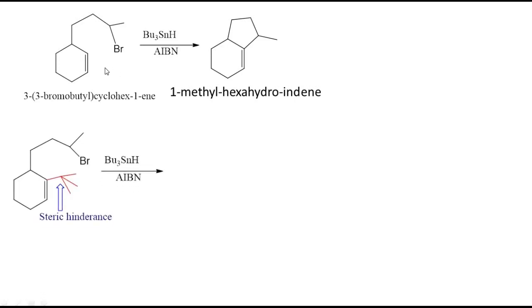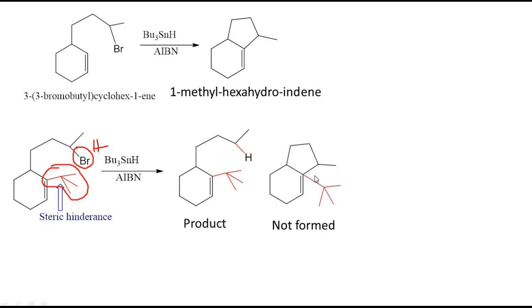Let us take the same reactant here due to steric hindrance. The same reactant we have taken and due to steric hindrance, the product formed, the cyclization will not occur here. Instead of cyclization, this bromine will be replaced by hydrogen. Hence, here there will be no ring formation occurs. This will be the product. This bromine is replaced by hydrogen. No cyclization formed due to steric hindrance. And this product, we are expecting this product and this product was not formed.